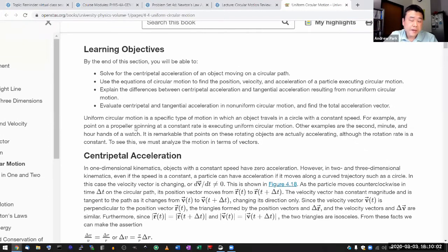So yeah, uniform circular motion is a specific type of motion in which an object travels in a circle with a constant speed. It is remarkable that points on these rotating objects are actually accelerating although the rotation rate is constant.